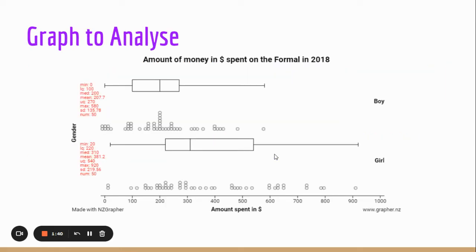If we're looking at this particular graph, which is the amount of money spent in dollars on the formal in 2018, we can see the center — there's a box and there are tails. We're going to talk about this graph. The first thing we're going to talk about is the center — these two lines here, which are the medians. The median is 200 for boys and 310 for girls.